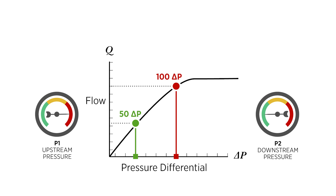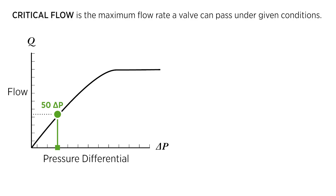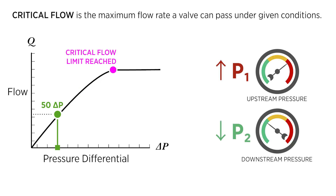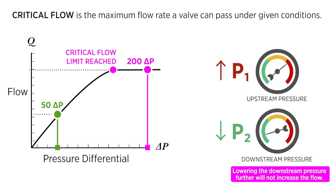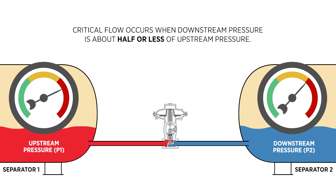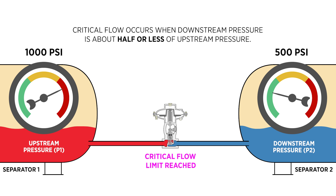You can raise the flow by either increasing upstream pressure or lowering downstream pressure to a certain point. Critical flow is the maximum flow rate a valve can pass under given conditions. Once the limit is reached, lowering the downstream pressure further will not increase the flow. Critical flow occurs when downstream pressure is about half or less of upstream pressure. For example, if a valve has 1000 psi upstream and 500 psi downstream, the valve has reached critical flow, and reducing downstream pressure further won't change the flow rate.